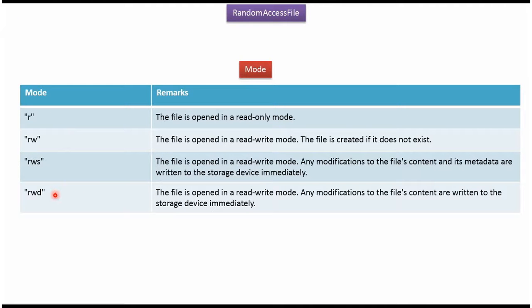Here you can see the modes supported by Random Access File. The first one is Read Only Mode — the file is opened in Read Only Mode. The second one is Read Write Mode — the file is opened in Read Write Mode, and if the file is not there, then the file will be created and opened in Read Write Mode.